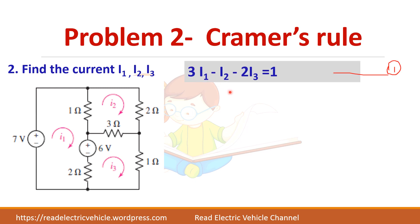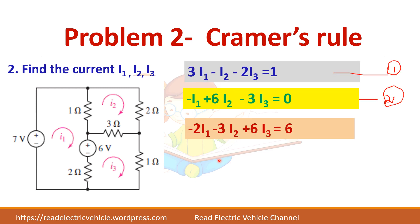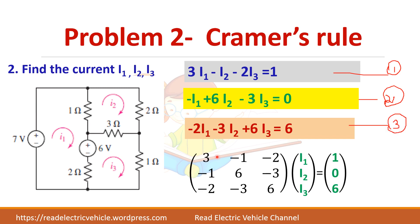Write the three equations in matrix form. First equation coefficients: 3, −1, −2, equal to 1. Second equation: −1, 6, −3, equal to 0. Third equation: −2, −3, 6, equal to 6. You can observe that the diagonal elements are positive and all other elements have a negative sign. Also, the off-diagonal submatrix is symmetric — elements like (1,2) and (2,1) mirror each other.